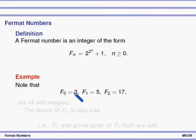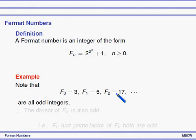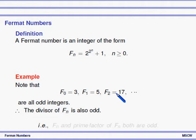We observe that F0 = 3, F1 = 5, F2 = 17, F3 = 257 — all are odd numbers. Therefore the divisors of Fn are also odd. This is very important for the theorem we are about to prove. Fn is an odd number, so definitely its divisors are also odd. Both Fn and any prime factor of Fn are odd.